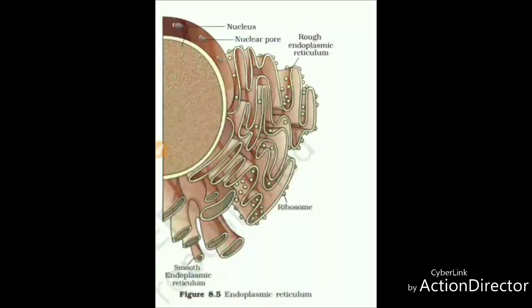Now let us look at the endoplasmic reticulum in diagrammatic form. There are two types: rough endoplasmic reticulum and smooth endoplasmic reticulum. The major difference is the presence of ribosomes in rough endoplasmic reticulum. Both rough ER and smooth ER originate from the outer membrane of the nucleus.